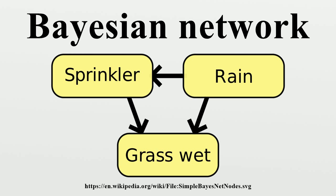Suppose that there are two events which could cause grass to be wet: either the sprinkler is on or it's raining. Also, suppose that the rain has a direct effect on the use of the sprinkler. Then the situation can be modeled with a Bayesian network. All three variables have two possible values, T and F. The joint probability function is defined where the names of the variables have been abbreviated to G equals grass wet, S equals sprinkler turned on, and R equals raining.